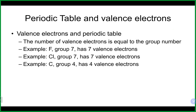Chlorine, which is group seven, has seven valence electrons. Carbon, which is group four, would have four valence electrons. Valence electrons are really important because they are the electrons involved in bonding — both ionic bonding and covalent bonding. Core electrons, because they are closer to the nucleus and lower in energy, are held a lot tighter and are not involved in bonding.